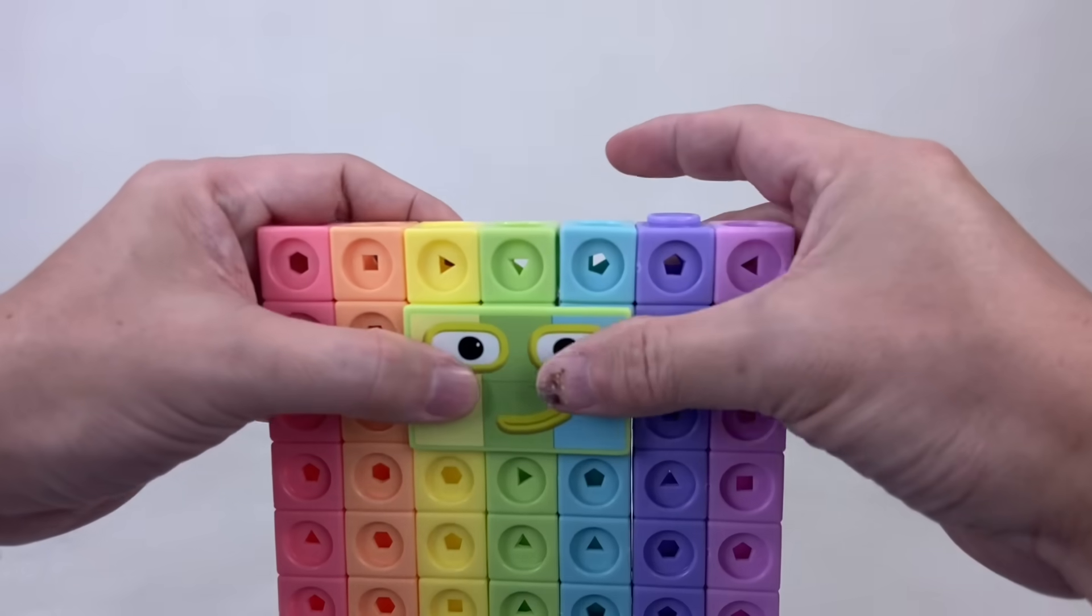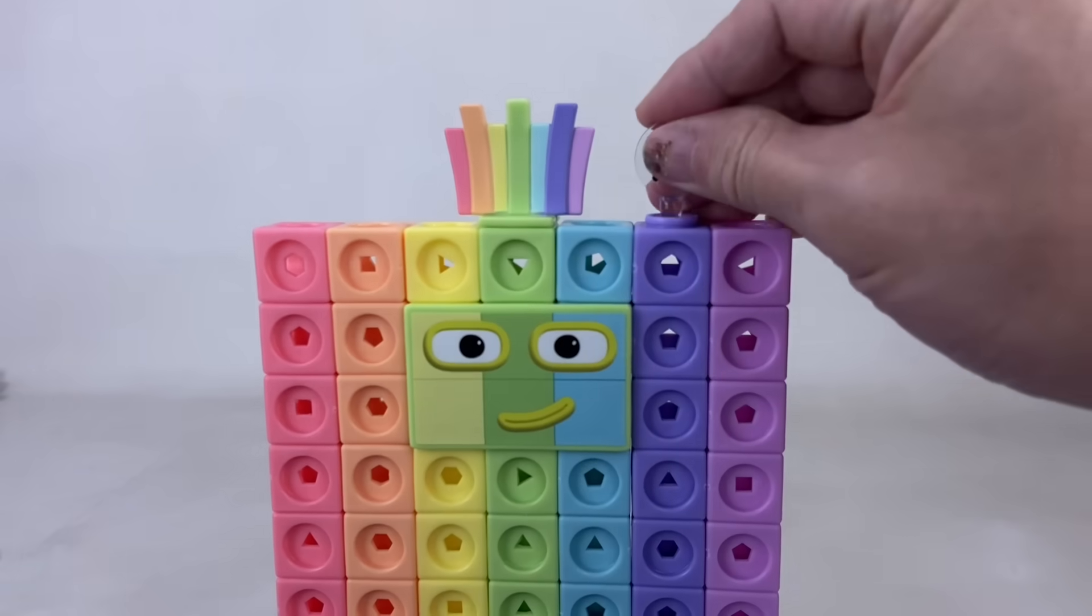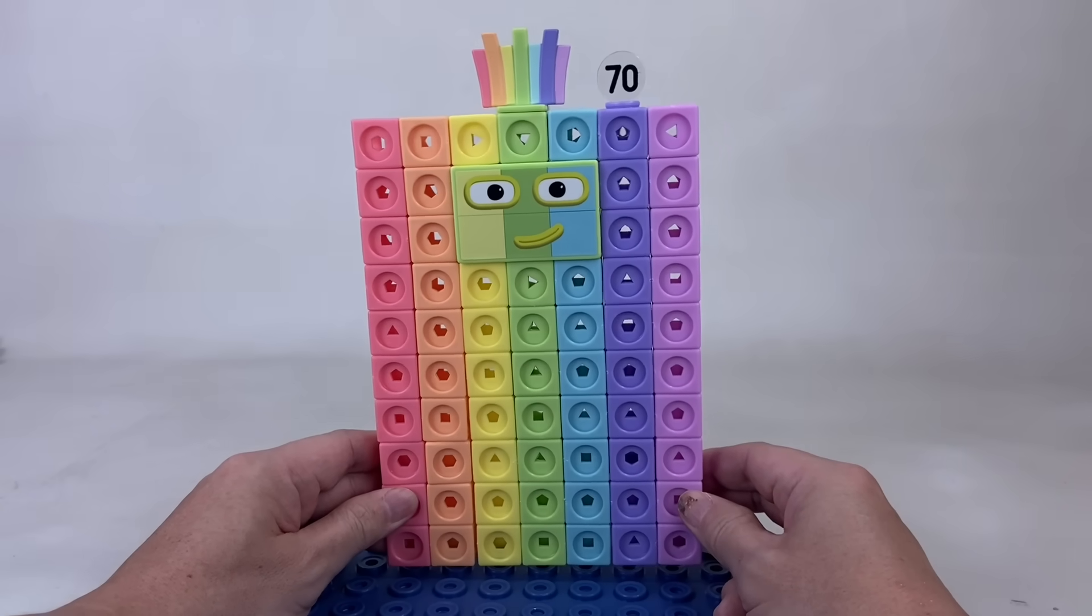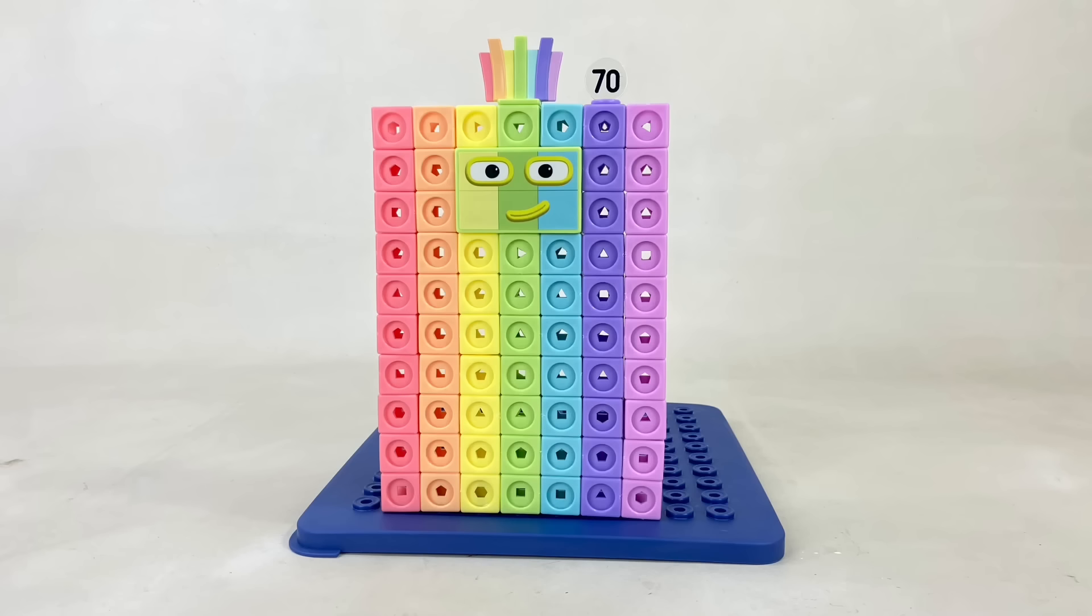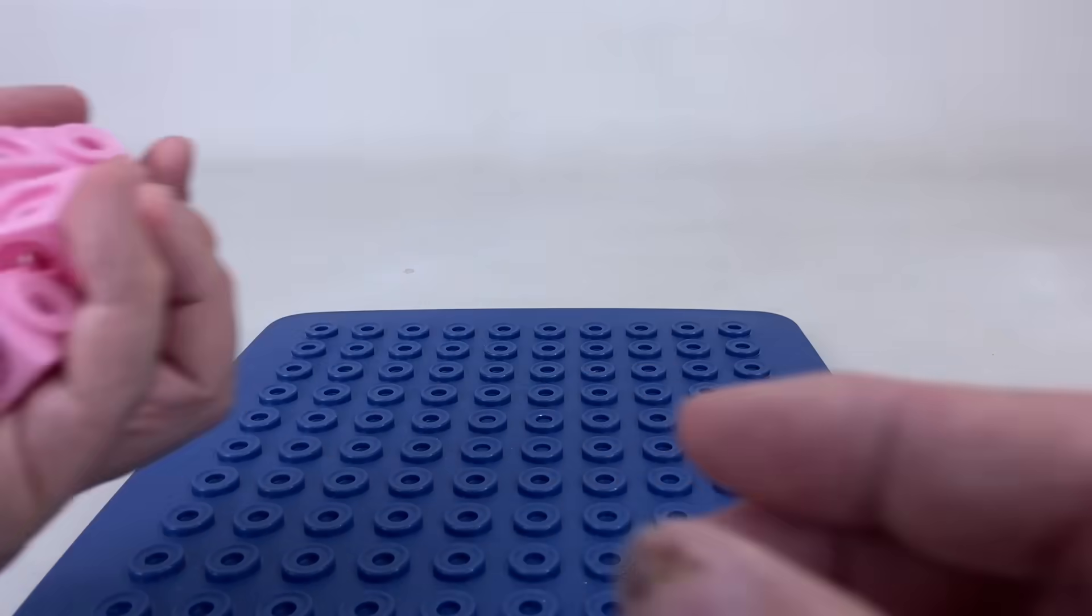His face is colorful and even his hair. We'll also add his numberling. I am 70, you lucky numbers! 70 is made up of seven 10s.